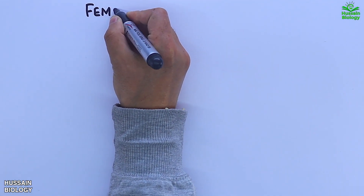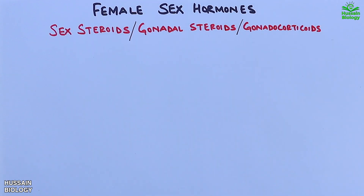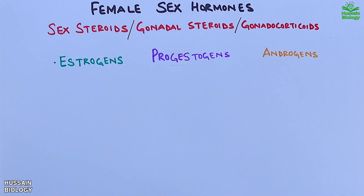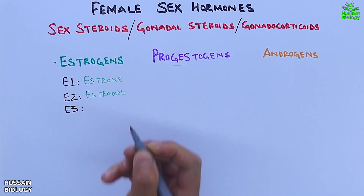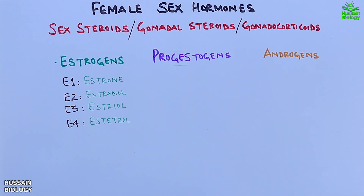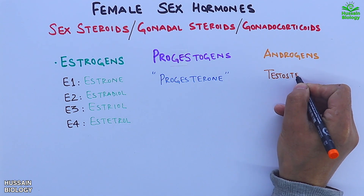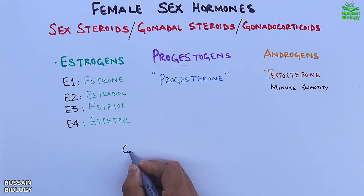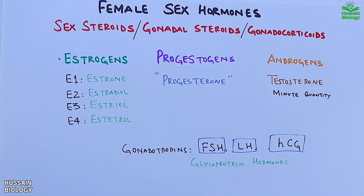In this video we'll be discussing the female sex hormones, also known as sex steroids, sex corticoids, or gonadocorticoids. Female sex hormones include estrogens, progestogens, and androgens. In the estrogen class we have E1 (estrone), E2 (estradiol), E3 (estriol), and E4 (estetrol). In progestogens we have progesterone, and in androgens we have testosterone, though it is synthesized in minute quantities in females. We also see associated hormones called gonadotropins like FSH, LH, and HCG, but these are not sex hormones.